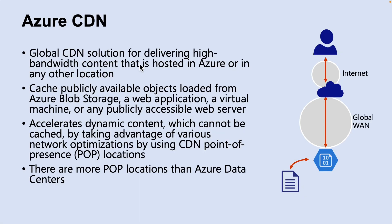In Azure, Azure Content Delivery Network is a global CDN solution for delivering high bandwidth content hosted in Azure or any other location. Using Azure CDN, you can cache publicly available objects loaded from Azure Blob Storage, a web application, a virtual machine, or any publicly accessible web server. Azure CDN can also accelerate dynamic content which cannot be cached by taking advantage of various network optimizations using CDN POPs, for example using route optimization to bypass BGP protocol.